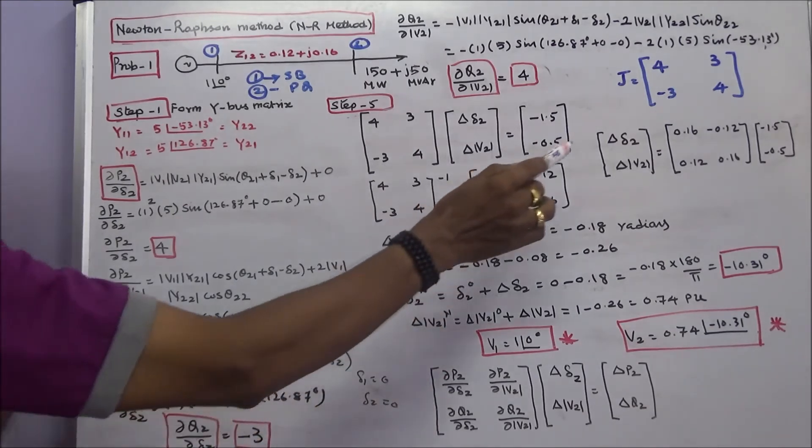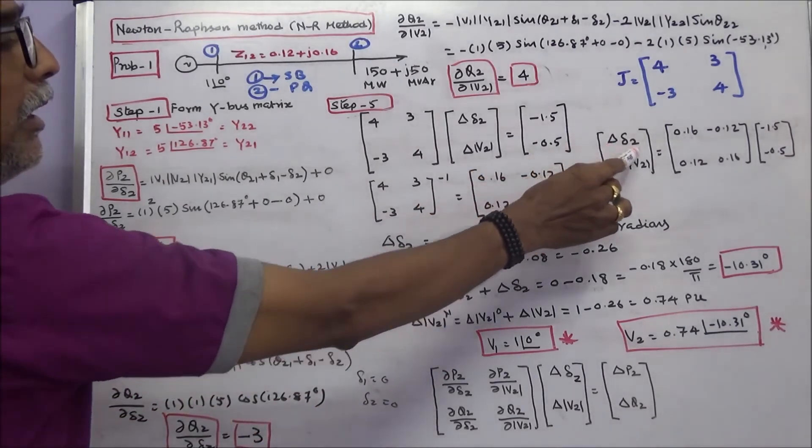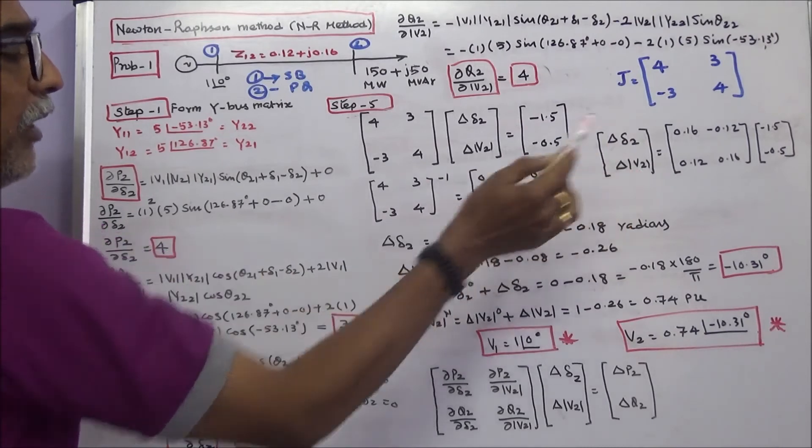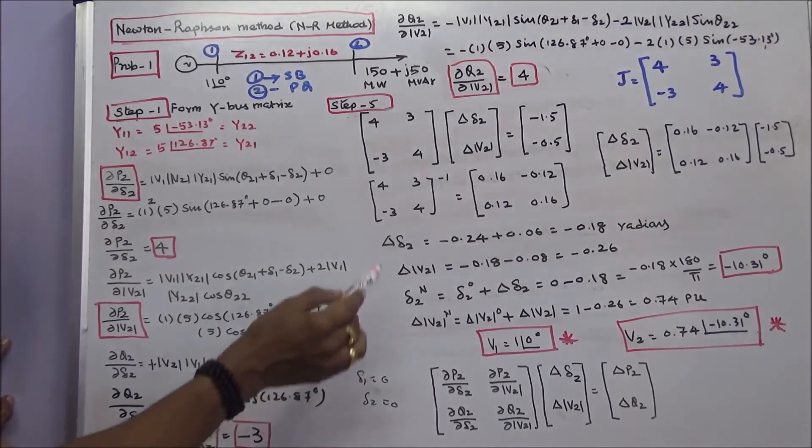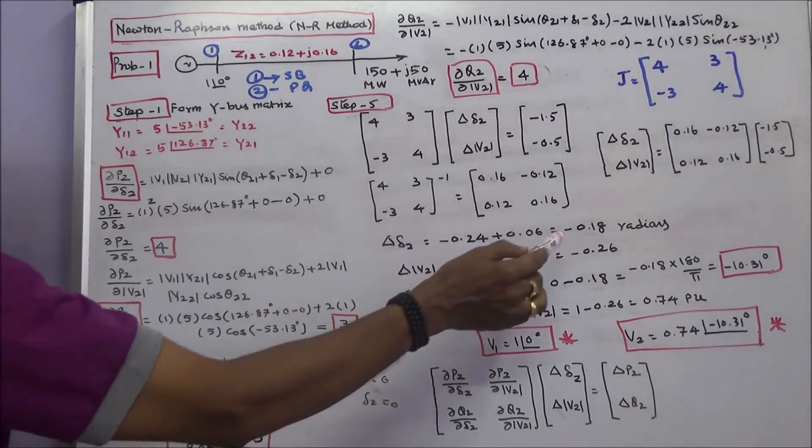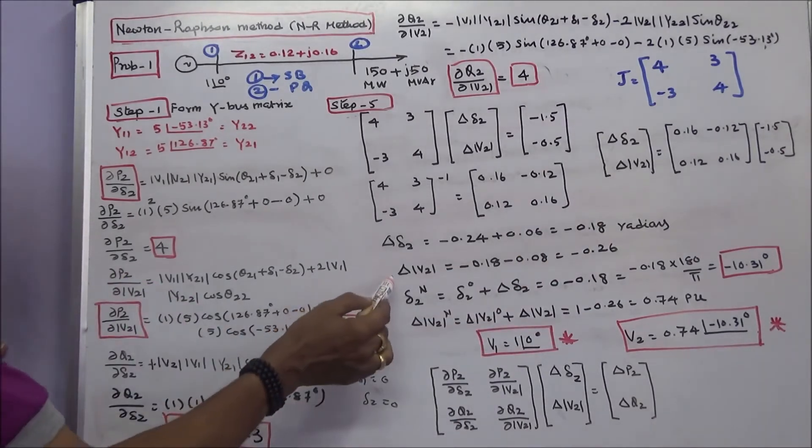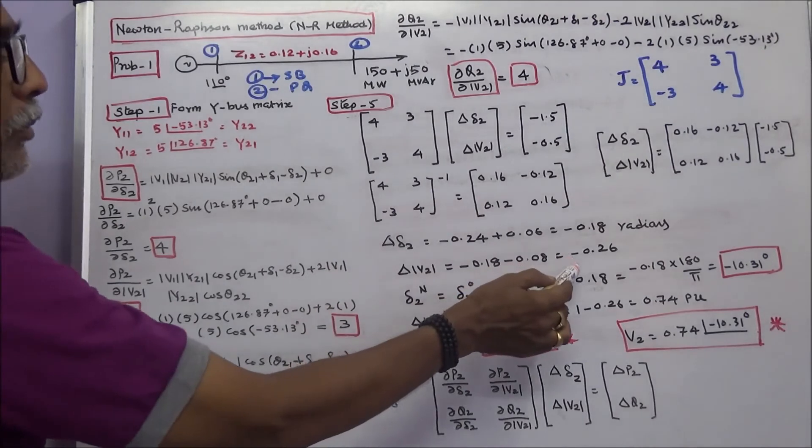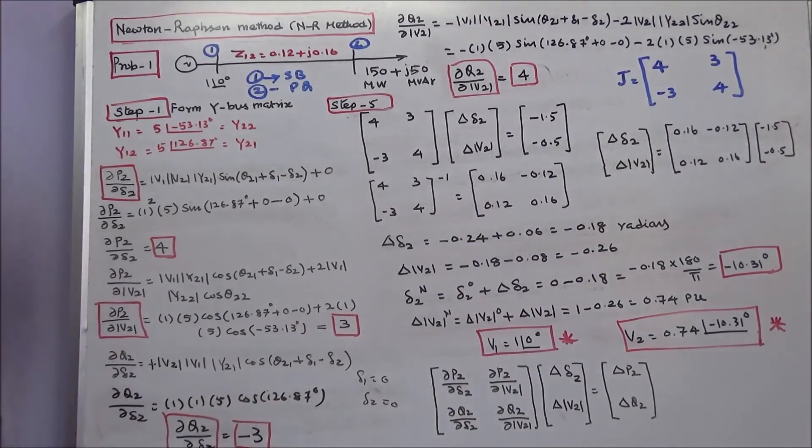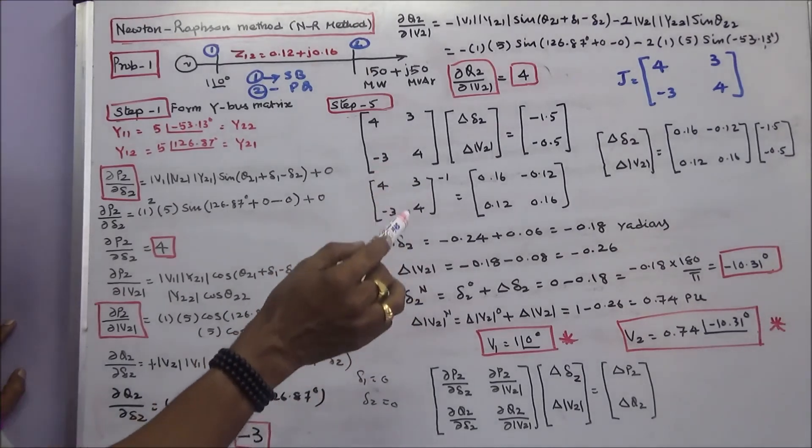Now I can easily calculate del δ2 and del |V2|. So the delta 2 value is -0.18 radians. The change in modulus of V2 value is -0.26. The new value is - the old value is 0 and 1.